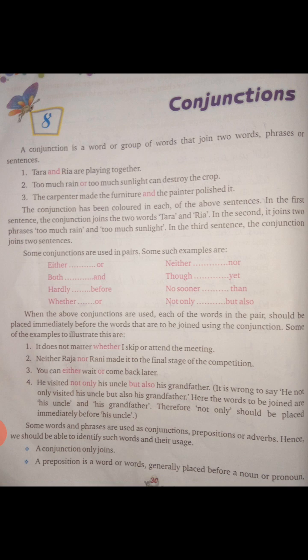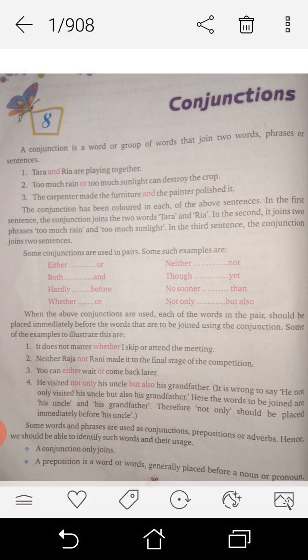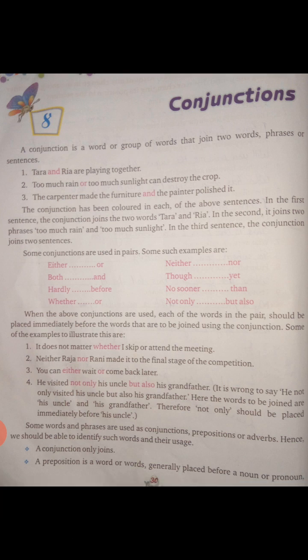He visited not only his uncle but also his grandfather. It is wrong to say: He not only visited his uncle but also his grandfather. The correct form is: He visited not only his uncle but also his grandfather. Here the two words to be joined are 'his uncle' and 'his grandfather', therefore 'not only' should be placed immediately before 'his uncle'.